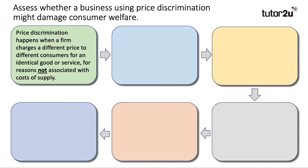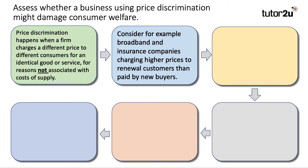The key is to build connected chains of reasoning. I'd start with a definition. Price discrimination happens when a firm charges a different price to different consumers for essentially the same good or service — not to do with the cost of production. That's a nice clean definition for knowledge marks. Then consider, for example, broadband and insurance companies who often charge higher prices to renewal customers — existing customers — than the price paid by new buyers. So a bit of application there.